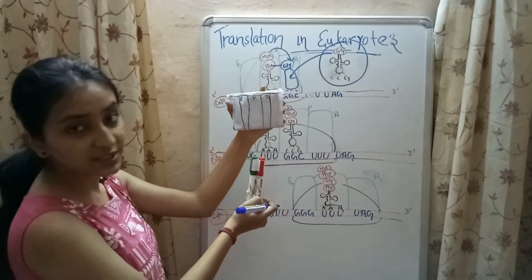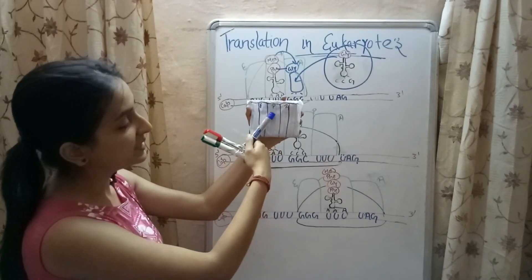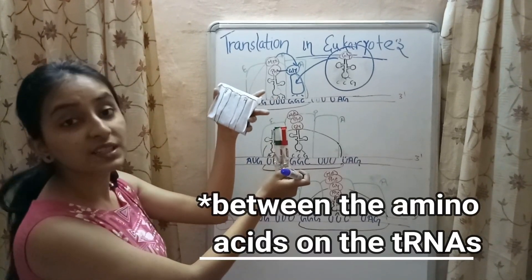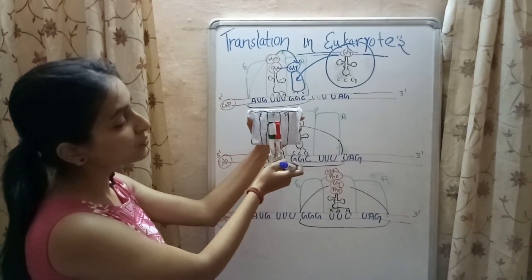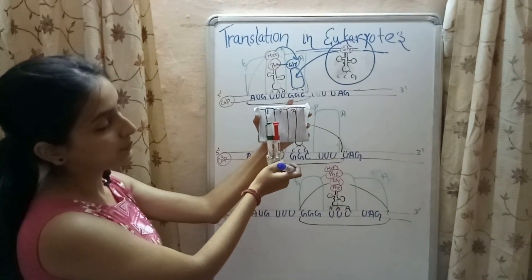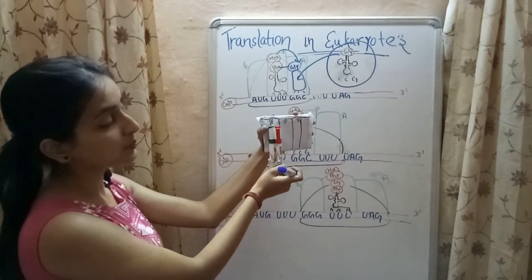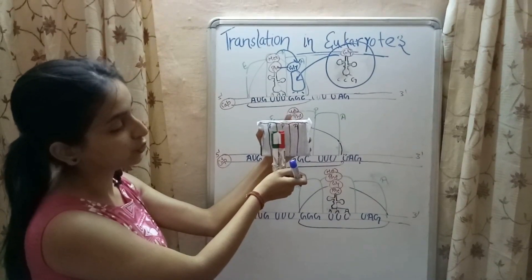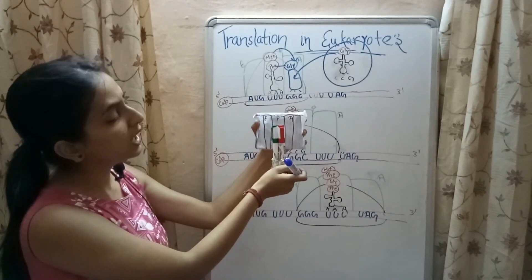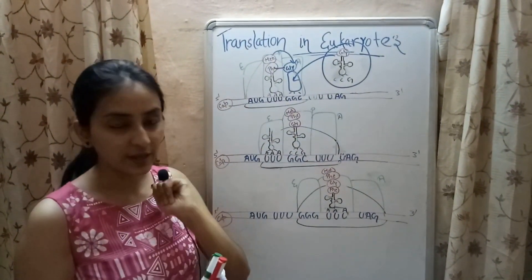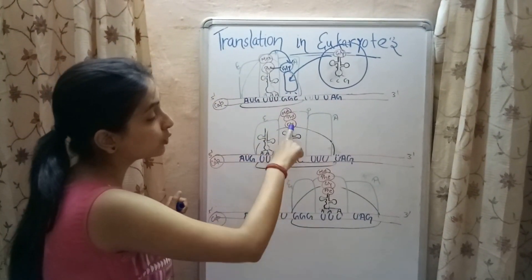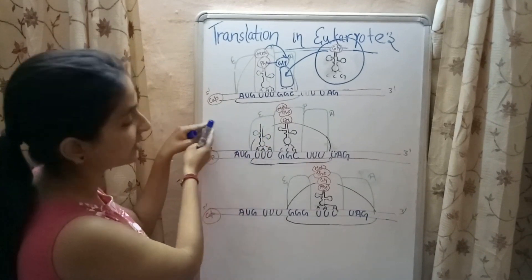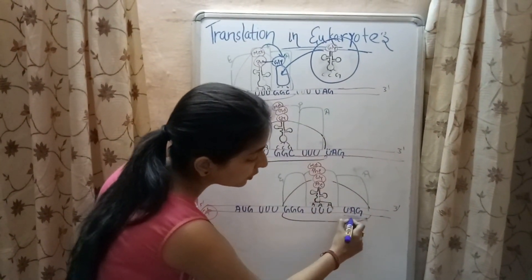To summarize: the ribosome has three sites — A, P, and E. Initially two tRNAs are present at the A and P sites. After peptide bond formation, the ribosome shifts one triplet forward. The P site tRNA moves to the E site and exits, while the A site tRNA moves to the P site. The A site is then ready to accept another tRNA. The P site holds the growing polypeptide chain, and this cycle continues until the ribosome reaches the termination codon.